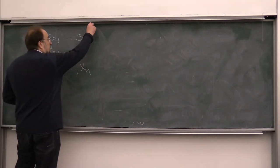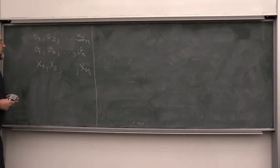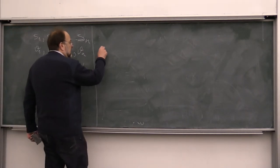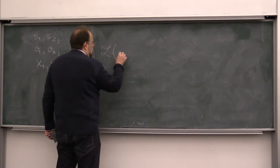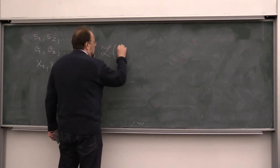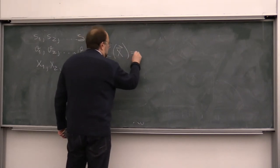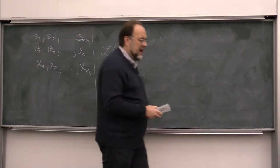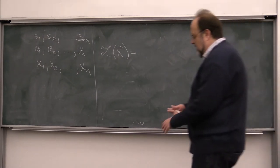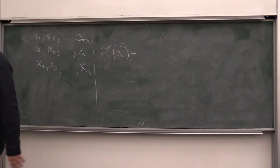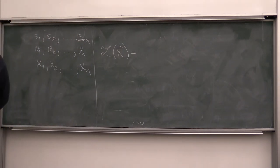Let's see what maximum likelihood estimation tells us to do in this setup. What is the likelihood that we have these measurements? Assuming that the errors are independent and normally distributed — in practice we often make the assumption that errors are normally distributed.